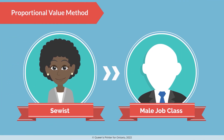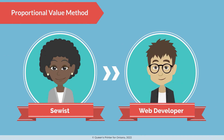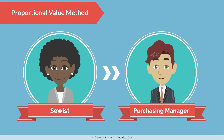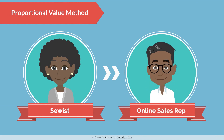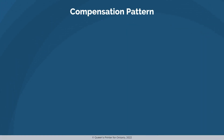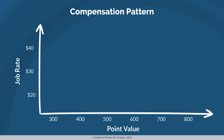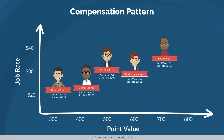The idea behind the Proportional Value Method is that we use a minimum of three male job classes to extrapolate the overall compensation pattern of our company. Compensation pattern means the relationship between the point value and the job rate, and this is assessed using a statistical method called regression analysis.